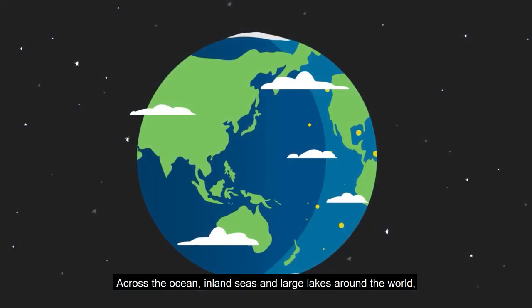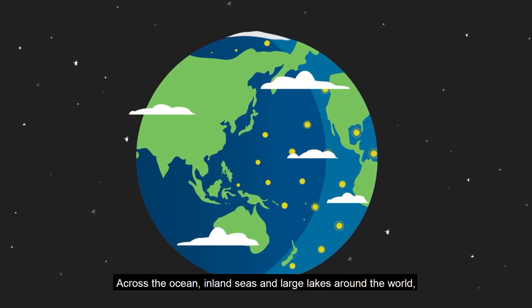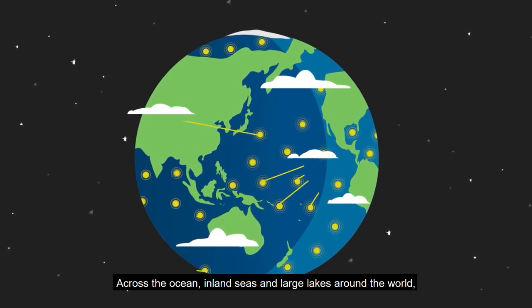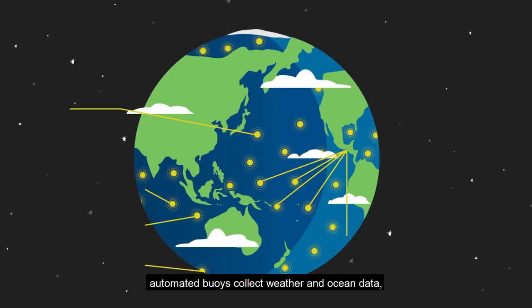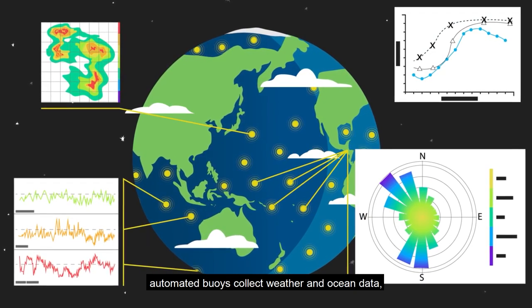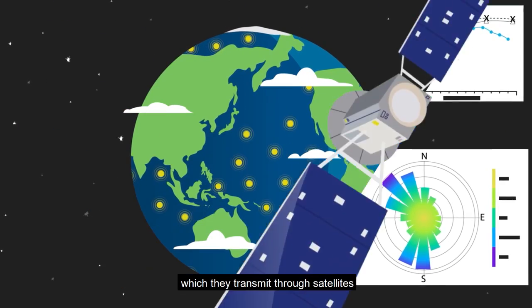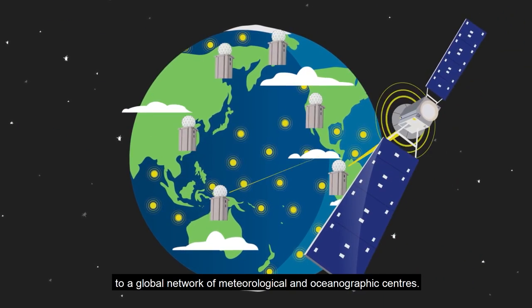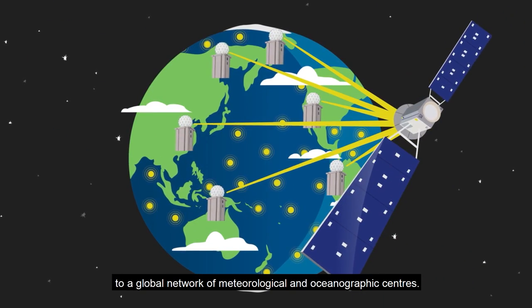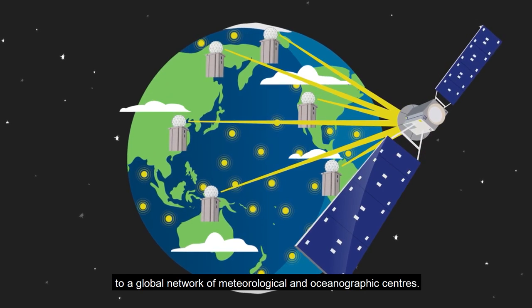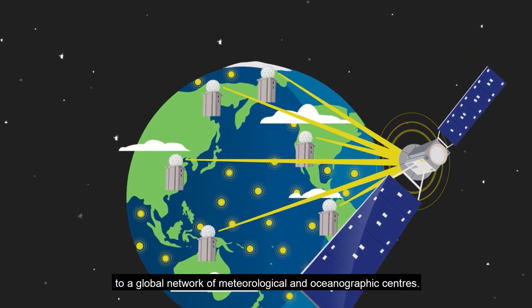Across the ocean, inland seas and large lakes around the world, automated buoys collect weather and ocean data, which they transmit through satellites to a global network of meteorological and oceanographic centers.